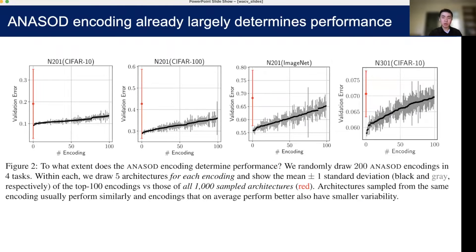We find that in popular search spaces, it's already highly predictive of performance. For example, we can see here on three different NASBENCH 201 and NASBENCH 301 tasks, within each ANASOD encoding, the different architectures can perform very similarly. The standard error is much smaller as compared to the red error bar, which shows the overall standard deviation across all architectures in the search space.